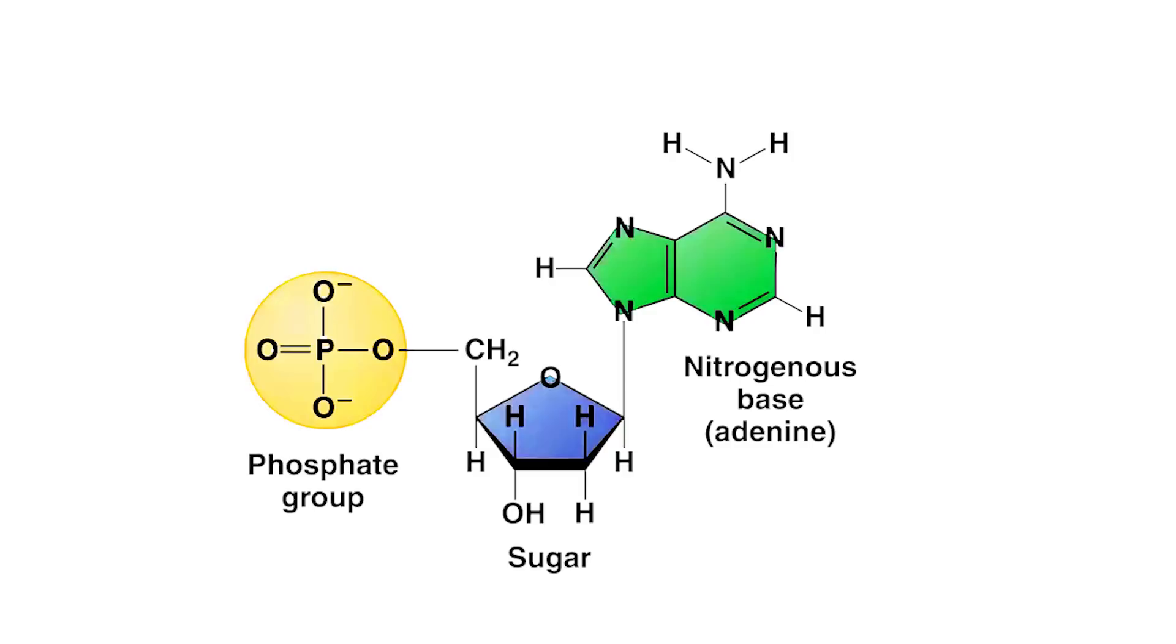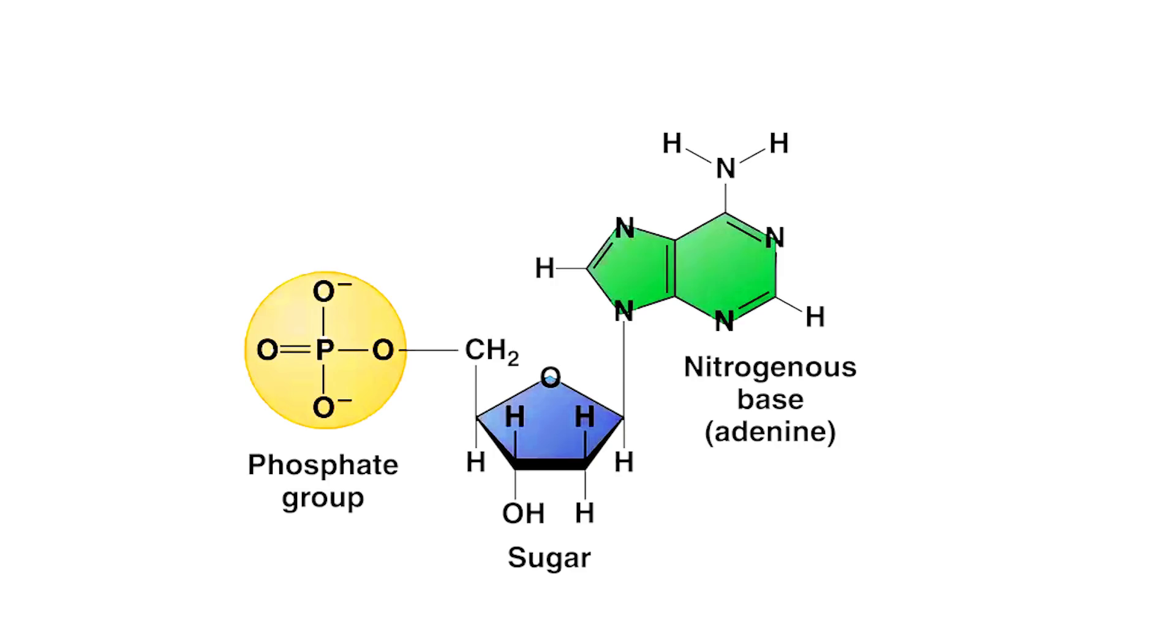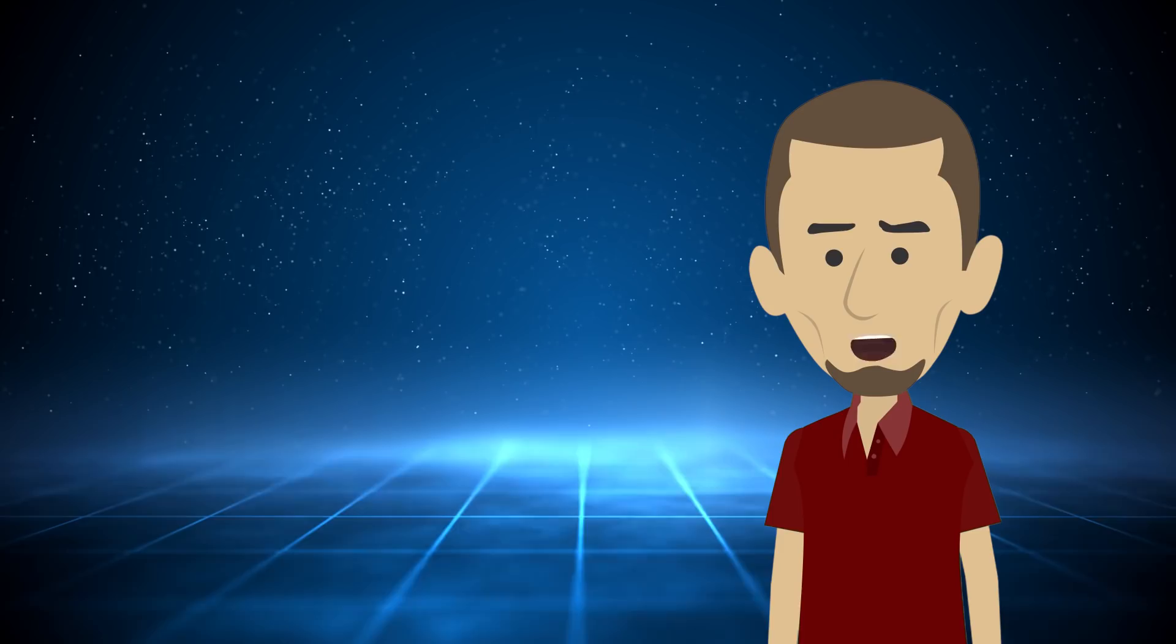But for years, despite having these three pieces of a ribonucleotide, scientists were stumped trying to find the circumstances under which they could merge to make a fully formed ribonucleotide. But science doesn't just throw in the towel and resort to wild speculation, it keeps digging. Chemistry is complicated, and there's usually more than one way to skin a cat.